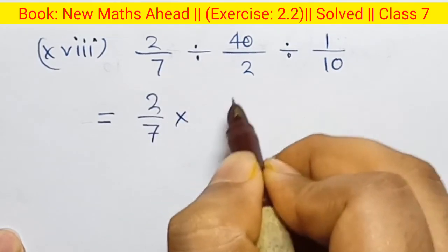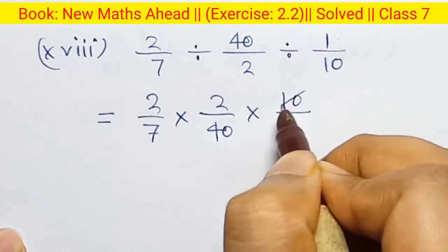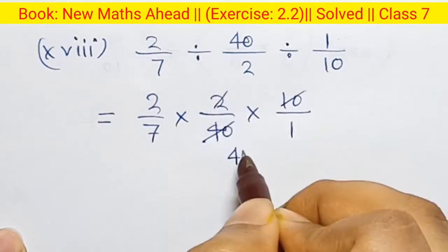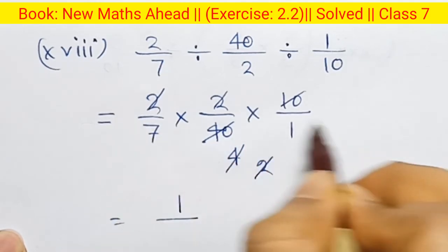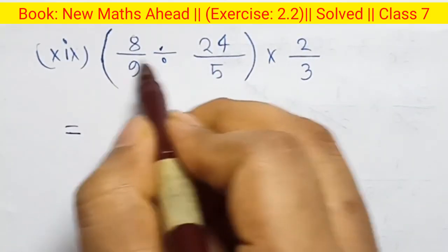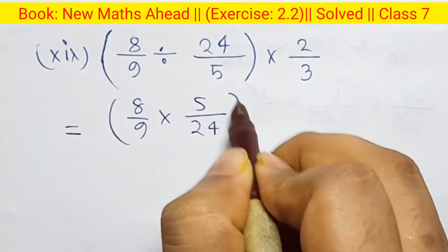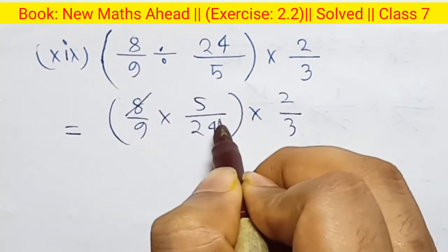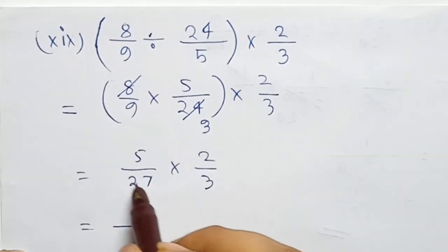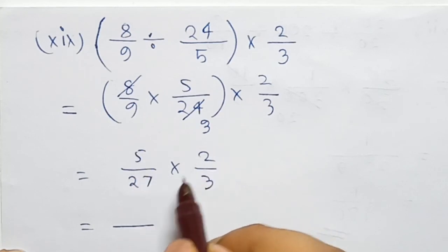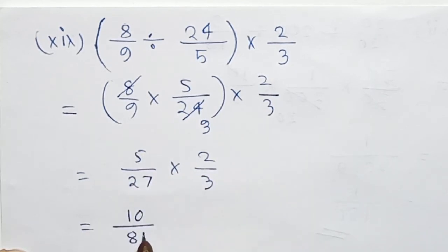7 — multiply: 40 into 10 by 1. Ten and forty cancel — four times. Next, 22 and 22 cancel. Finally, numerator: 1, denominator: 7. Eight by 9 — multiply: 5 by 24. Next, multiply 2 by 3 — eight and twenty-four cancel, three times. Five by 27 into 2 by 3 — numerator: 5 into 2 is 10, denominator: 27 into 3 is 81. Answer: 10 by 81.